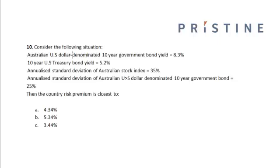Consider the following situation: the Australian US-denominated 10-year government bond yield is equal to 8.3%, the 10-year US Treasury bond yield is equal to 5.2%, the annualized standard deviation of the Australian stock index is equal to 35%, and the annualized standard deviation of the Australian US-denominated 10-year government bond is equal to 25%. The country risk premium is closest to?